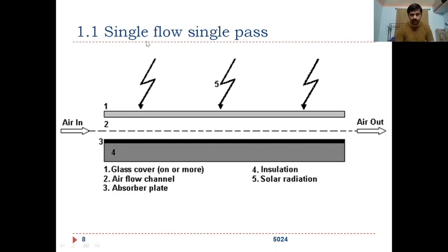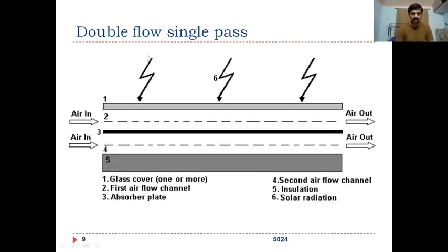In double flow single pass, air flows in the same direction but through two channels — through both the upper and lower sides of the absorber plate. Air is allowed to flow on either side of the absorber plate in the same direction. That is the only difference from the previous single flow single pass configuration.